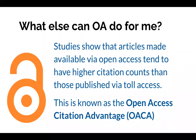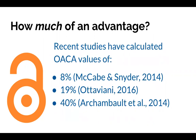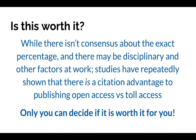There's a growing body of literature showing that articles made available through open access tend to have higher citation counts than those published through toll access — this is known as the open access citation advantage. There's a pretty wide variance across studies: from 8% to 19% to 40% higher citations. There's not consensus on the exact percentage, and there could be a lot of factors at work, including disciplinary differences, but studies continue to show an advantage in terms of citation counts when you publish openly. That said, this decision is part of academic freedom — you and your co-authors get to decide what the best way to publish and share your work is.